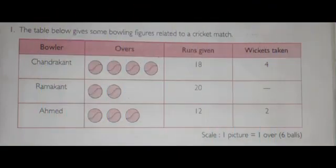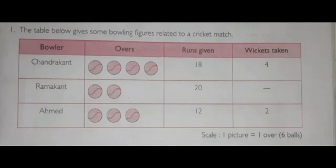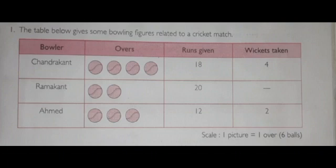Now, see the table on page number 97 of the Maths workbook. Observe the table and understand about pictographs. The table below gives some bowling figures related to a cricket match, and represents the information about bowling in a pictograph. Answer the following questions using this pictograph.